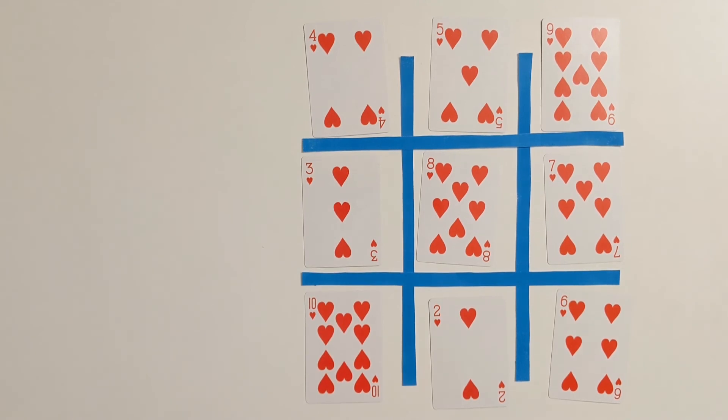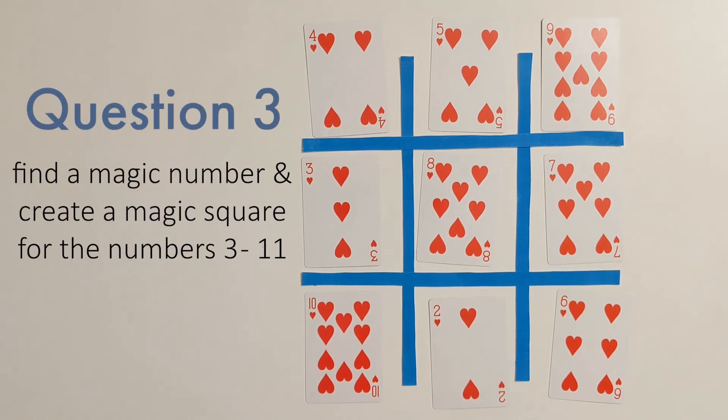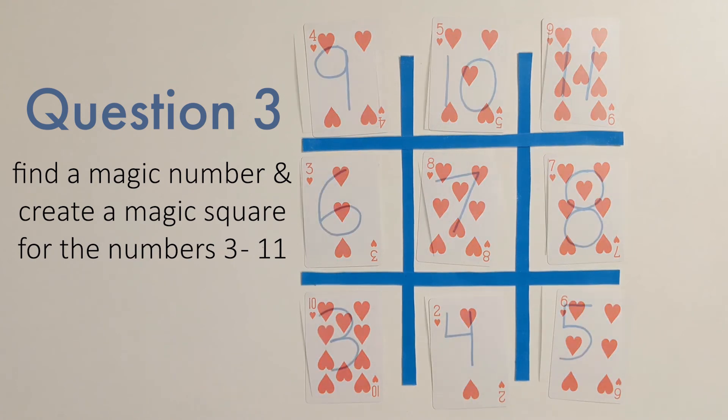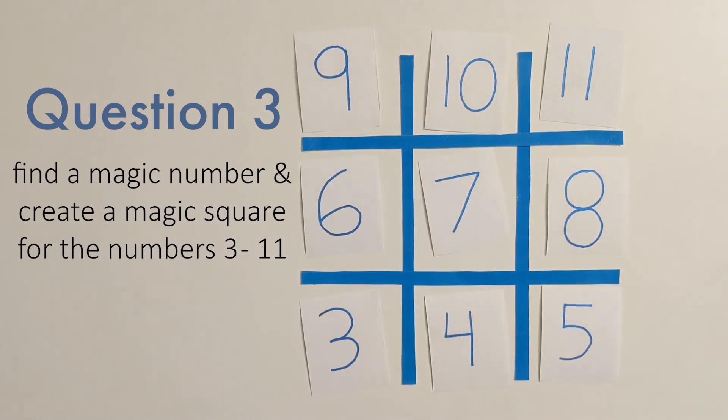After you've figured out a magic square for 2 through 10, can we do 3 through 11? Playing cards might not be best for this, so we'll need to switch over to index cards that we could freely use to create bigger and bigger numbers.